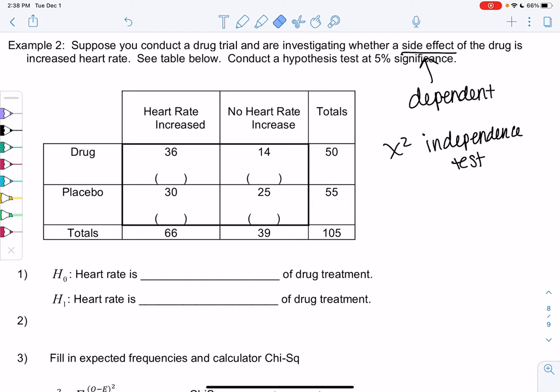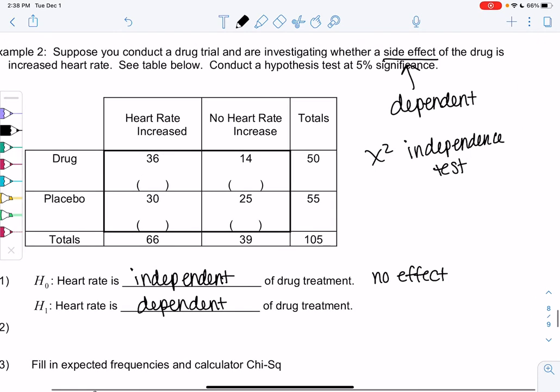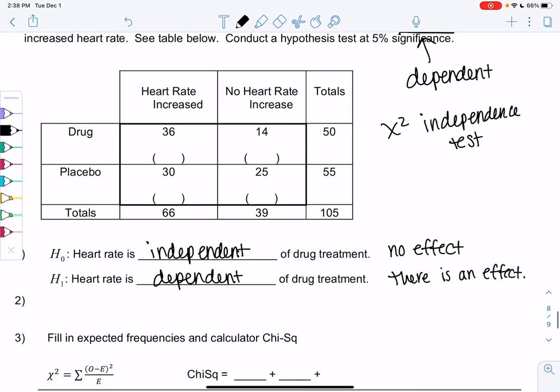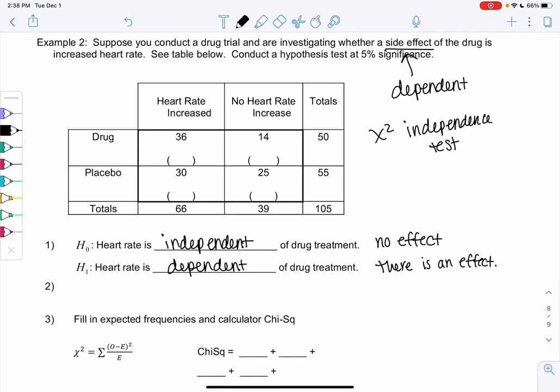And our H0 will always be the independence. So heart rate is independent of the drug, meaning the drug has no effect on heart rate. Or heart rate is dependent of the drug for treatment, so there is an effect. So this is how we can check if a drug causes any side effects.